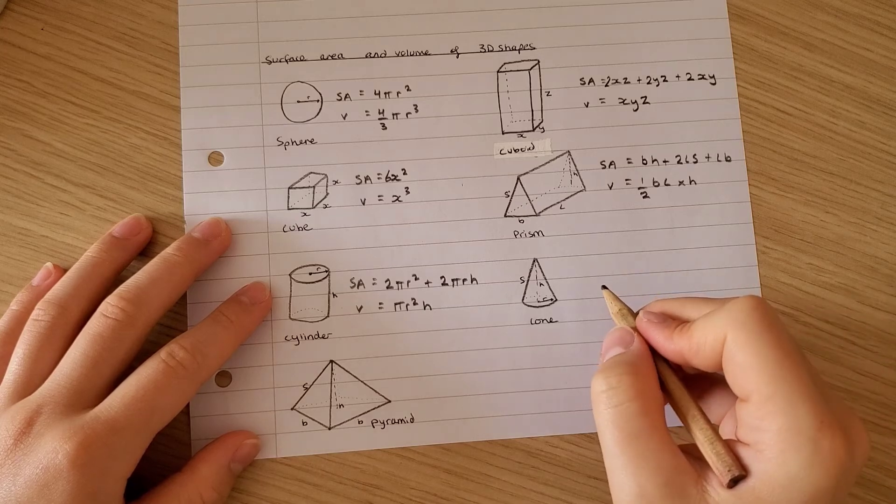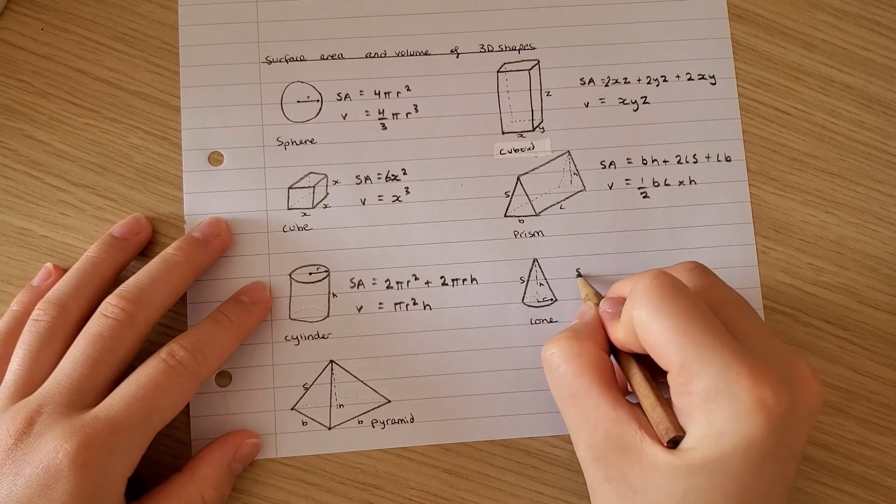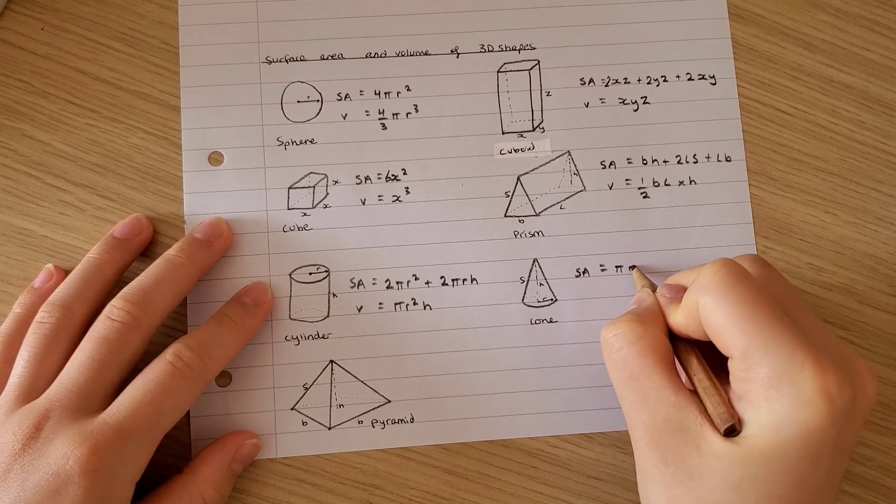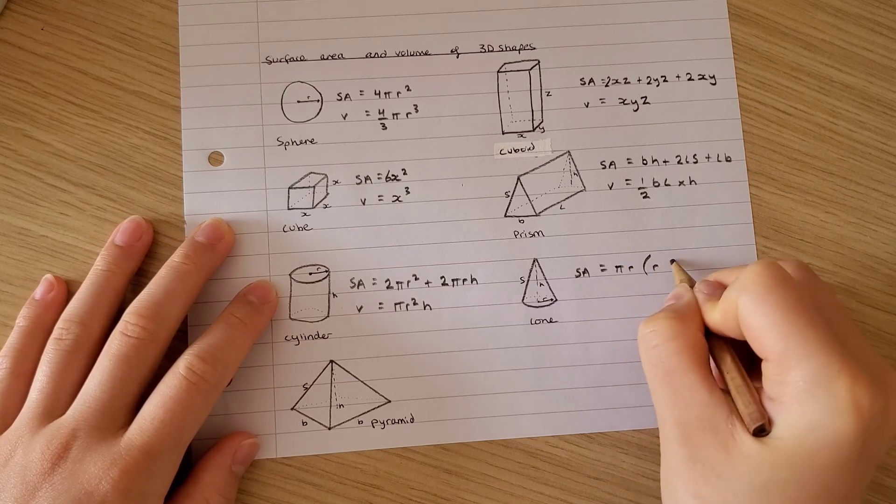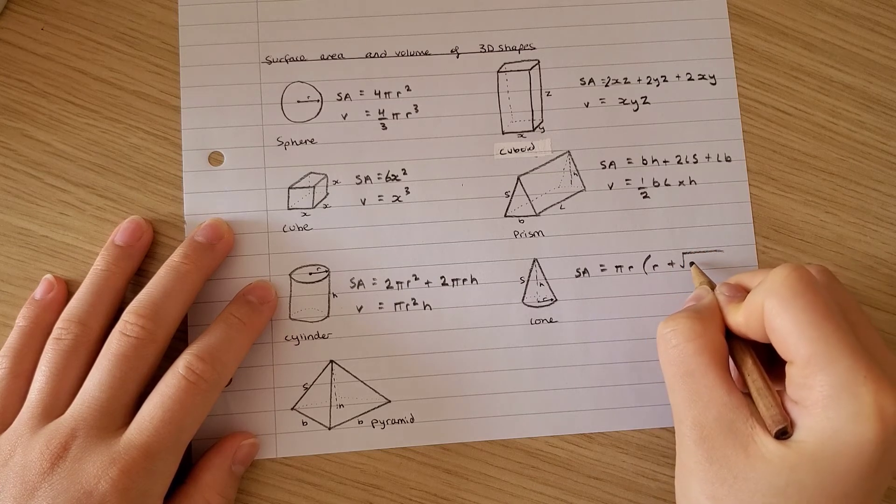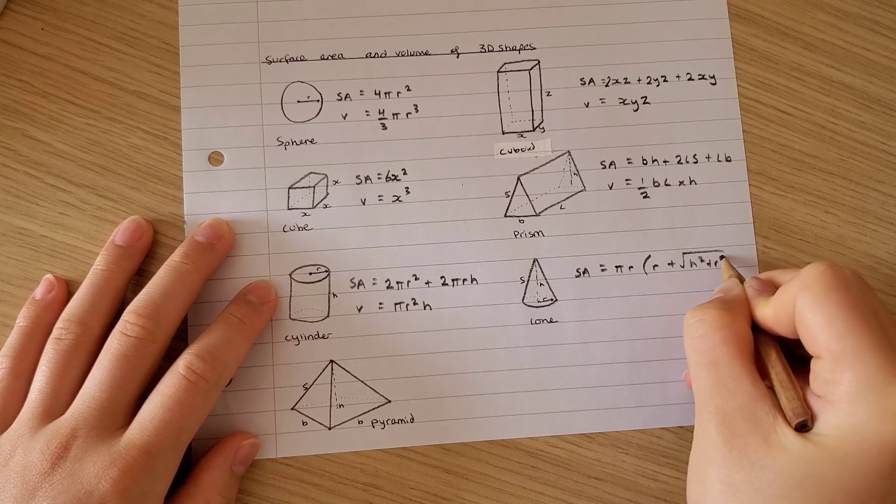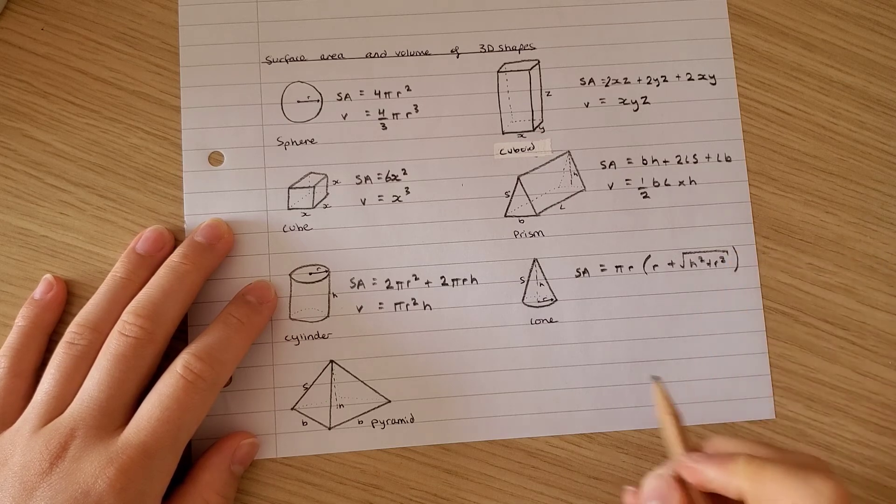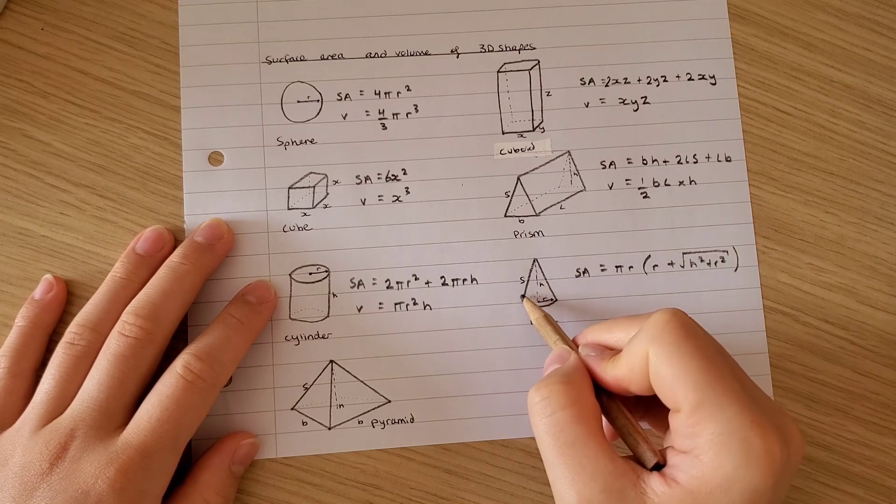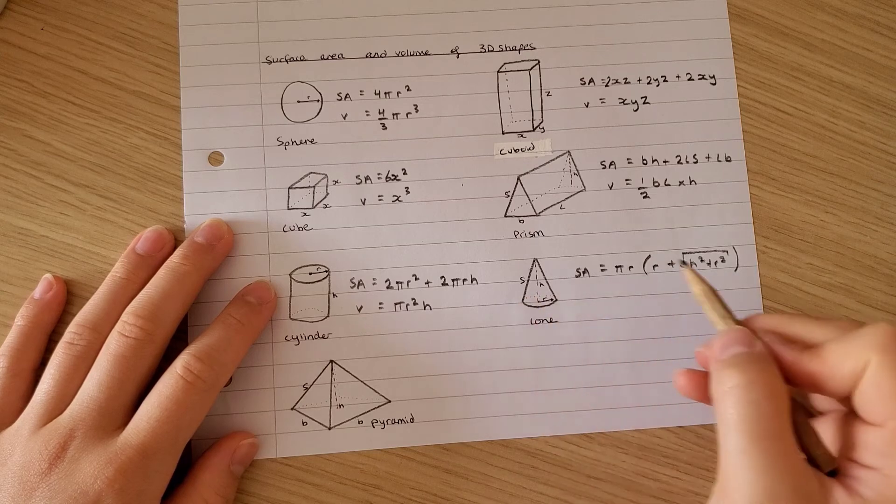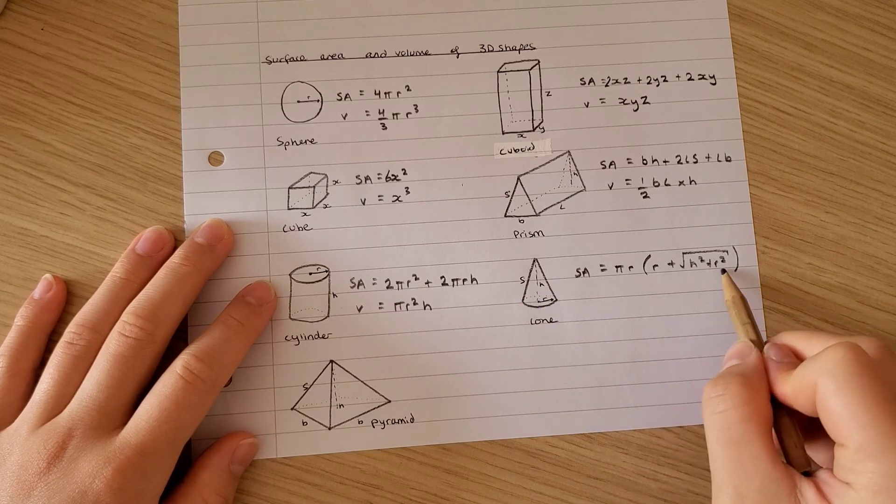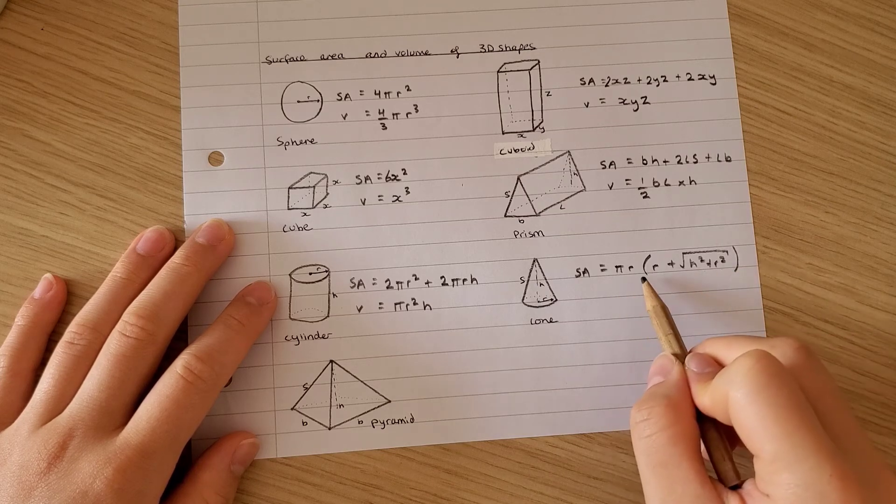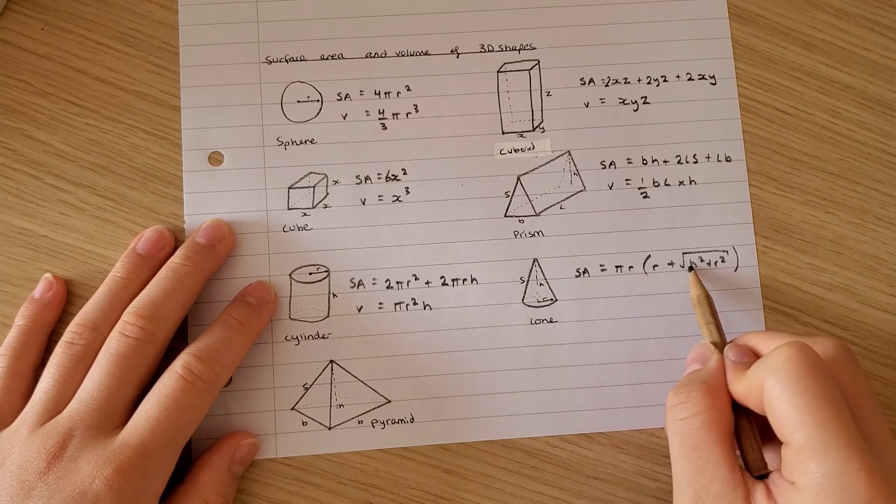For a cone, the surface area here is equivalent to pi r plus h, h squared plus r squared. An equivalent formula can be used where it takes into account the slanted side. But if you wanted to use that, that's fine. But this is incorporated in Pythagorean theorem to have it in terms of the radius and the height.